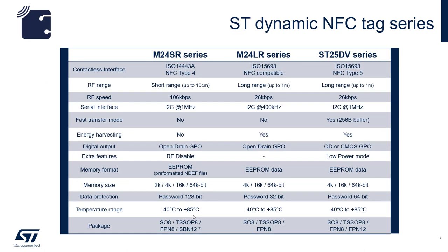ST dynamic tags family have three main series. The M24SR supports ISO 14443A with RF speeds up to 106K bits per second. Memory sizes range from 2 kilobits to 64 kilobits and are protected by 128-bit passwords.